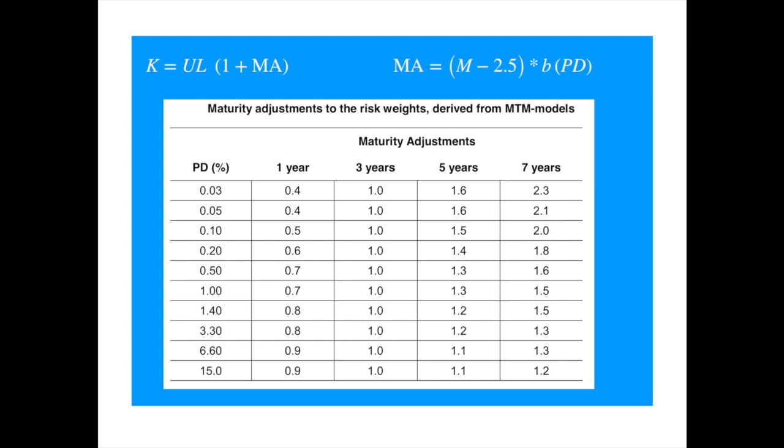Now, if you look at each row, the slope appears constant. For example, increasing maturity from 1 year to 3 years or 3 years to 5 years increases the requirement by 0.6, which is 0.3 per year. We see the same slope in the second row.